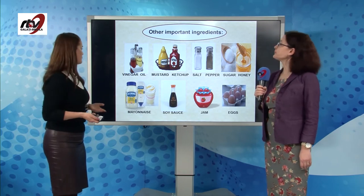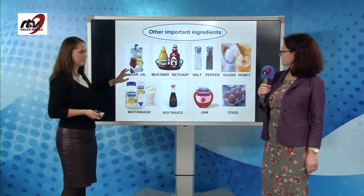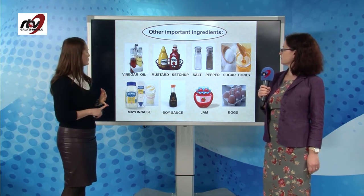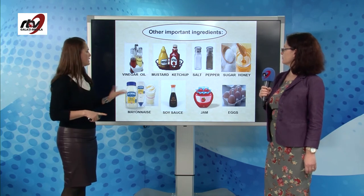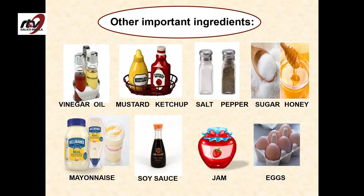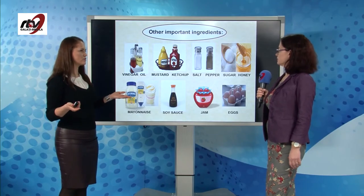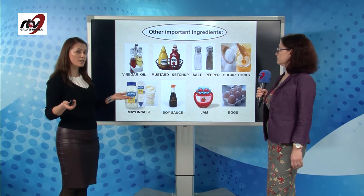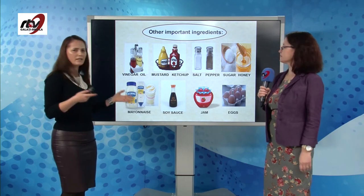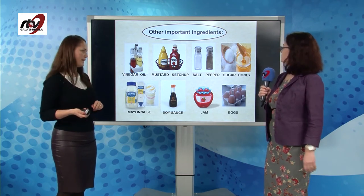Other important ingredients in the kitchen: vinegar, oil — that can be sunflower oil, olive oil and so on — mustard, ketchup, salt, pepper, sugar, honey, mayonnaise. In Asian cuisine, you use soy sauce — like for sushi, we dip sushi in soy sauce. Then we have jam, jelly, and of course, egg.